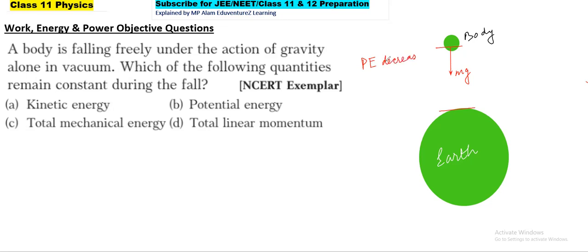As it goes down, the speed will increase and the height will decrease. So as speed increases, kinetic energy will increase. Potential energy will decrease.